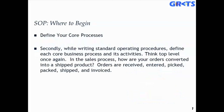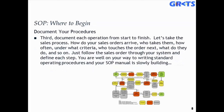Secondly, while writing your SOPs, we want to define each core business process and its subsequent activities. We're macro, not micro yet — think top level. For example, in the sales process, how are your orders converted into a shipped product? At a high level: orders are received, entered, picked, packed, shipped, and invoiced. We then migrate to our third step: document each operation from start to finish. How do your sales orders arrive? Who takes them? How often? Under what prescribed criteria? Who touches the order? What do they do? Follow the sales order process through your system, defining each step along the way clearly, concisely, and without ambiguity.